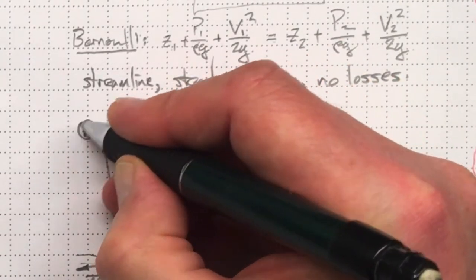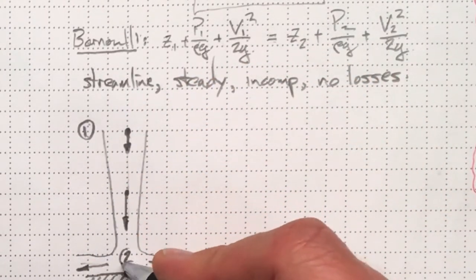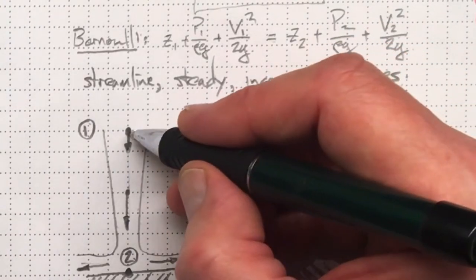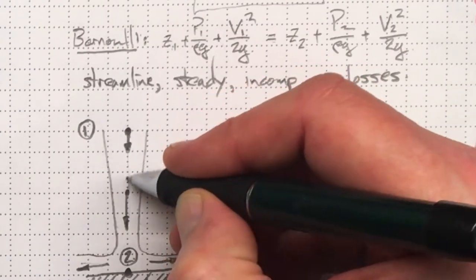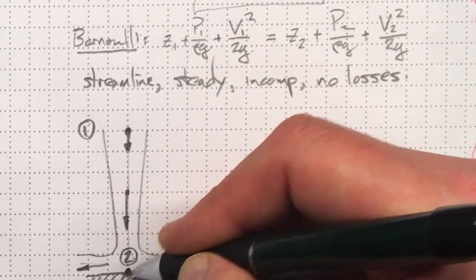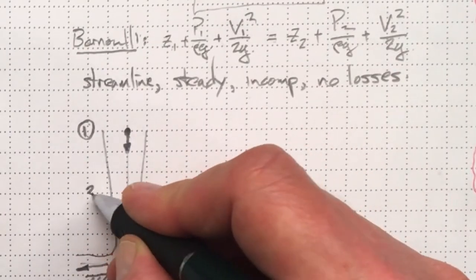We're hitting a stagnation point here and the flow is going off to either side. Let's pick those as points one and two. Up here and down here at the stagnation point. They're both on the same streamline that runs right down the middle of the flow.